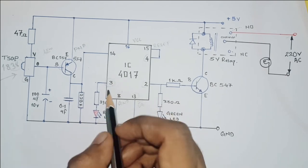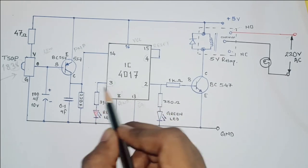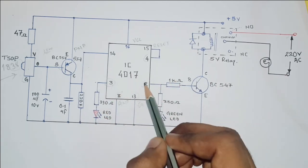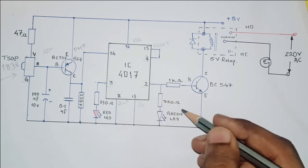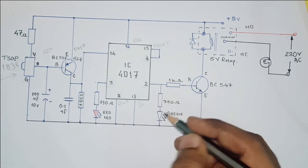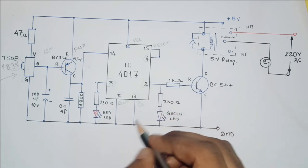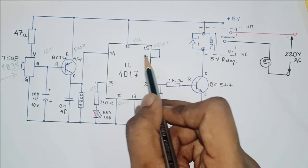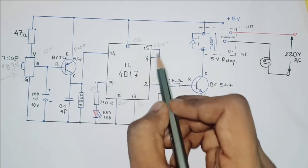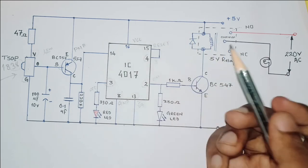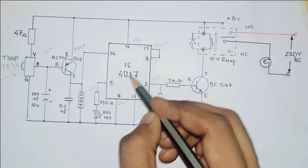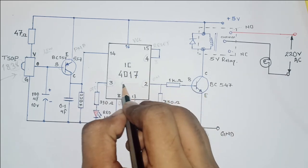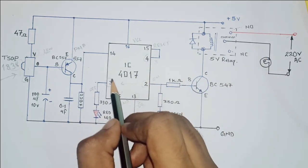This is the first output to which we have connected the red LED, which is going to indicate the off state of our appliance. This is the second output to which we have connected a green LED, which is going to indicate the on state of our appliance. This is pin number 4, which is the third output and is going to reset. That means it will bring the output from pin number 2 to pin number 3 back. So first it will be off.